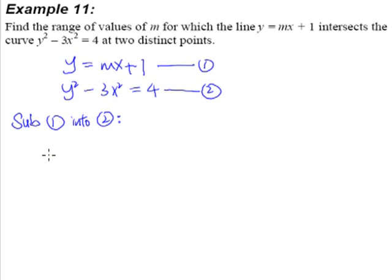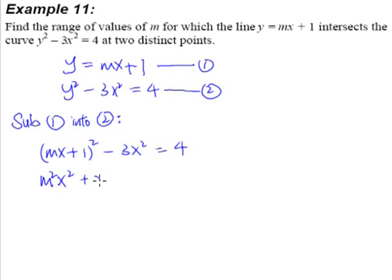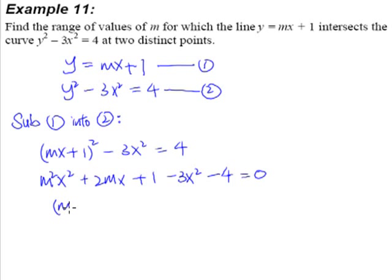After substitution, we get (mx + 1)² - 3x² = 4. Expanding and rearranging — bringing the 4 over — and collecting terms, we get (m² - 3)x² + 2mx - 3 = 0.